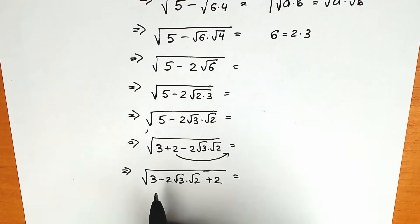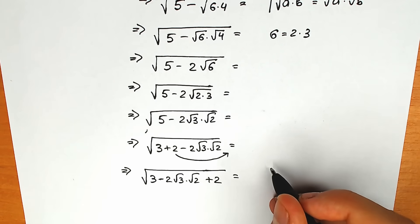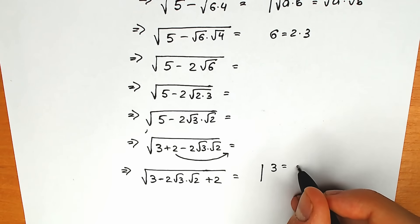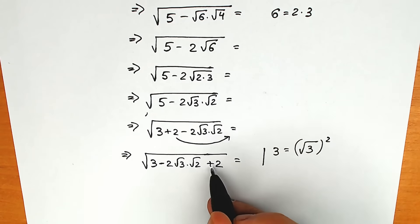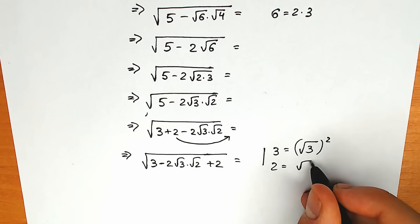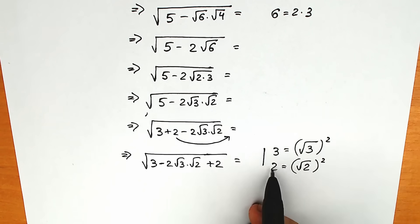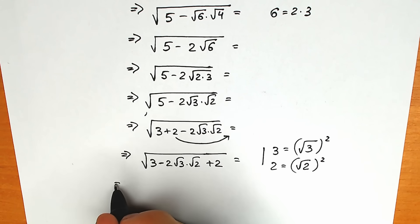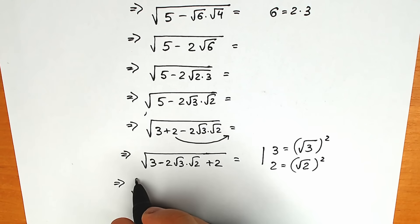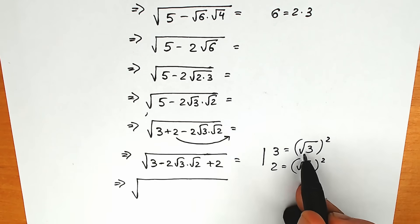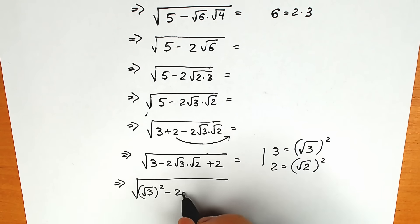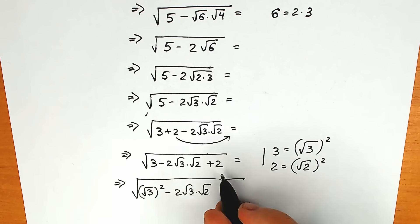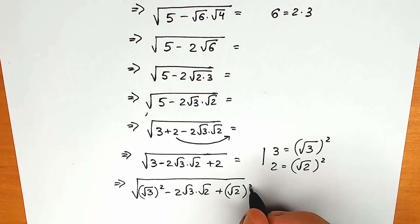What we're going to do next? Instead of 3 and 2, let's rewrite them as perfect squares: 3 can be written as square root of 3 to the second power, and 2 can be written as square root of 2 to the second power. So we have square root of: square root of 3 to the second power, minus 2 times square root of 3 times square root of 2, plus square root of 2 to the second power.